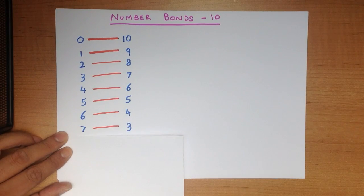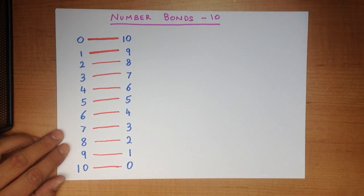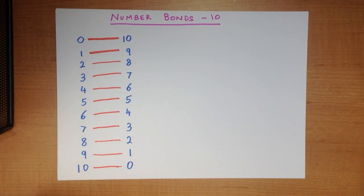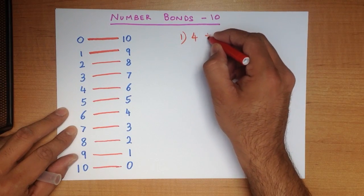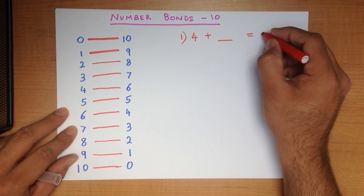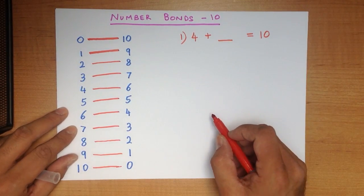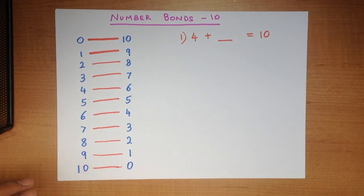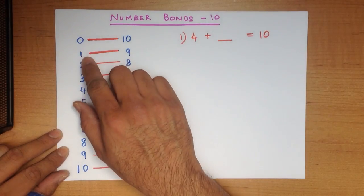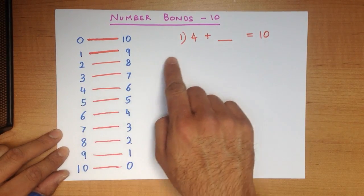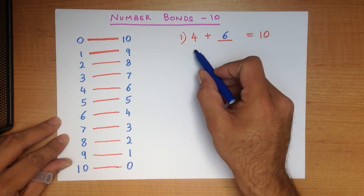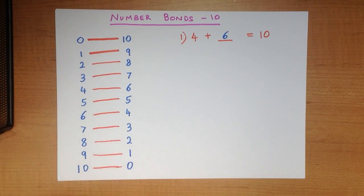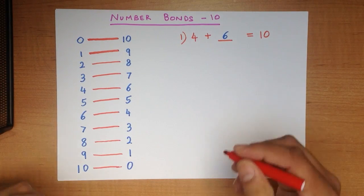4 plus what number makes 10? We can say 4 plus something equals 10. Now what do you think that something is? Let's look on our chart. On the left we go down here, we find the number 4 which is the same as this number 4. We go across and it is 6. 4 plus 6 equals 10. That was nice and easy, wasn't it?